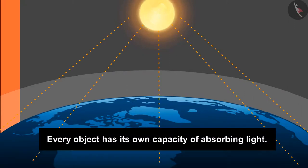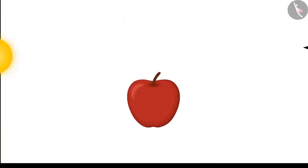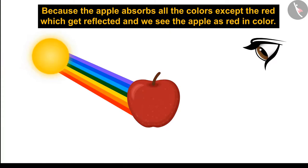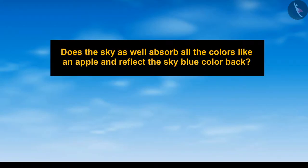These rays fall on various objects in the world, and every object has its own capacity for absorbing light. So why do we see apples as red? Because the apple absorbs all the colors except red, which gets reflected back to our eyes. So what is it about the sky that makes it appear blue? Does the sky also absorb all colors like the apple and reflect only blue back?